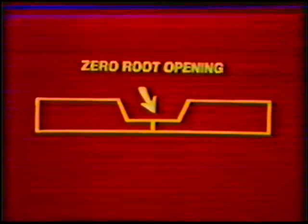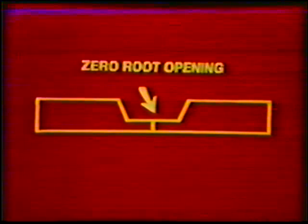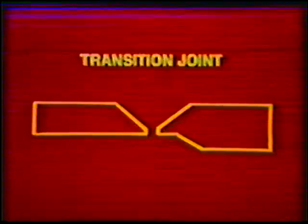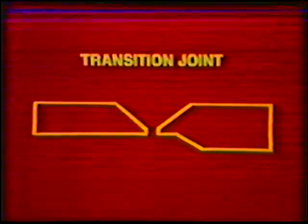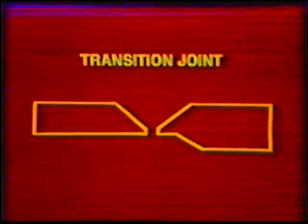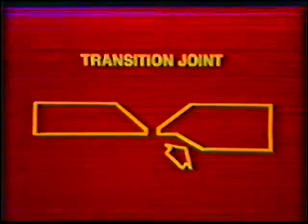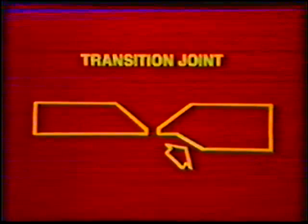At times, it may be necessary to weld two pipe sections with different wall thicknesses. In this case, a specialized kind of joint called a transition joint is normally prepared. The thicker of the two members is machined down to match the thickness of the thinner member before reaching the joint edge.